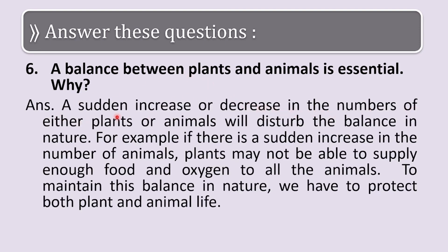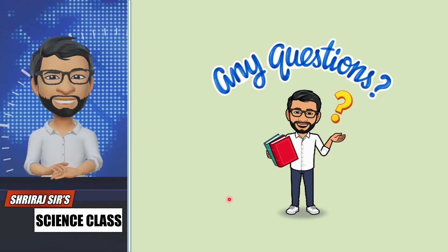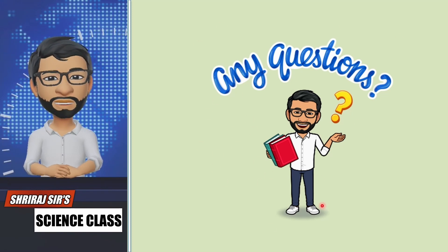Long answer Q6: why is a balance between plants and animals essential? A sudden increase or decrease in the number of either plants or animals will disturb the balance in nature. For example, if there is a sudden increase in animals, plants may not be able to supply enough food and oxygen. To maintain this balance, we must protect both plant and animal life.